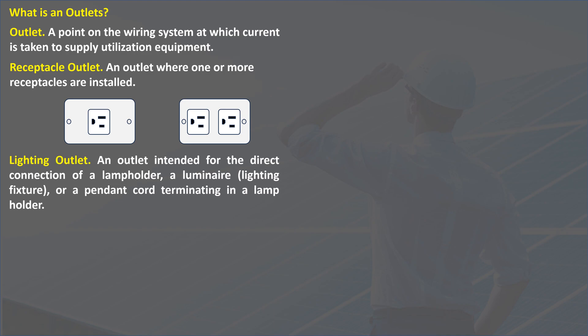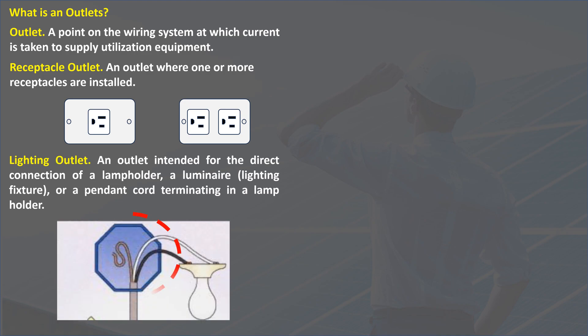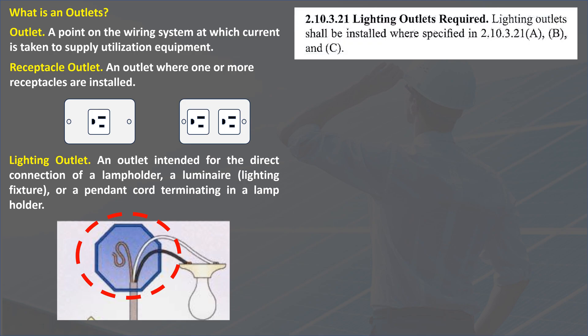There is also a lighting outlet. By code definition, a lighting outlet is an outlet intended for the direct connection of a lamp holder, a luminaire, a lighting fixture, or a pendant cord terminating in a lamp holder. The code rules for lighting outlets are covered in Section 2.10.3.21.